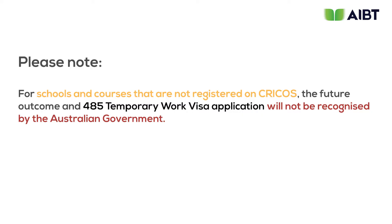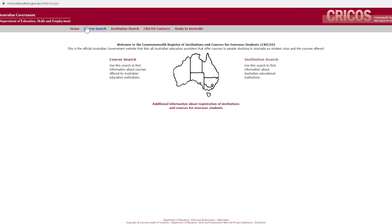When choosing an education provider, we must pay attention to whether the school and its curricula are currently registered on the Australian government CRICOS system. For schools and courses that are not registered on CRICOS, the future outcome for the 485 temporary graduate visa application will not be recognized by the Australian government. With this knowledge, we can navigate through the CRICOS website and check if our course and education provider are registered and satisfy the Australian study requirement.